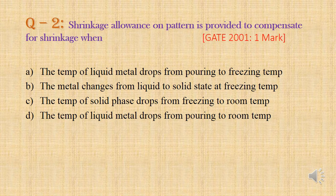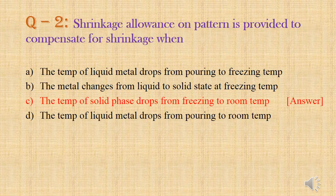Question 2: Shrinkage allowance on the pattern is provided to compensate for shrinkage when — Option A: temperature of liquid metal drops from pouring to freezing. Option B: metal changes from liquid to solid at freezing temperature. Option C: temperature of solid phase drops from freezing to room temperature. Option D: temperature of liquid metal drops from pouring to room temperature. Shrinkage allowance compensates solid shrinkage, which occurs during cooling from freezing to room temperature. Answer: Option C.